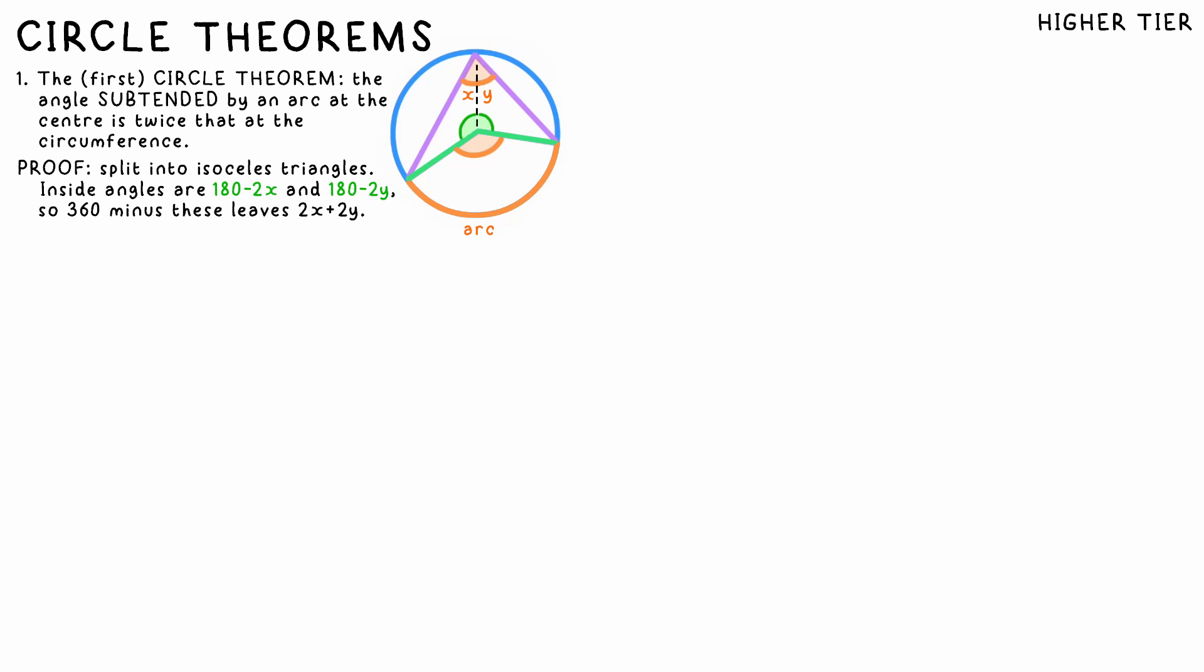The angles at the center therefore must be 180 minus 2x and 180 minus 2y. The angles outside the triangles must be 2x and 2y, bringing the total angle to double the original.